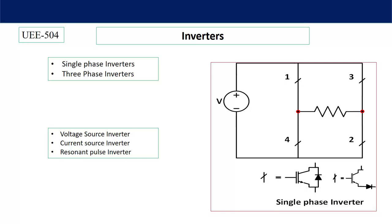Two types of switches are shown. In one switch, an IGBT is connected in parallel with a diode — this is used in a voltage source inverter, because in a VSI the output voltage waveform is independent of load impedance, so an anti-parallel diode is connected to allow free flow of current. In the case of a current source inverter, where current should be independent of load impedance, the diode is connected in series with the IGBT.